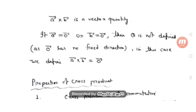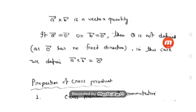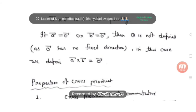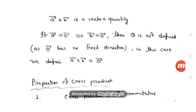Note that theta must lie between 0 and pi, inclusive. If either vector a-bar or b-bar is equal to zero, then theta is not defined. In that case, a-bar cross b-bar will be equal to the zero vector.